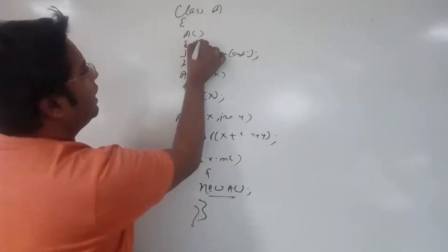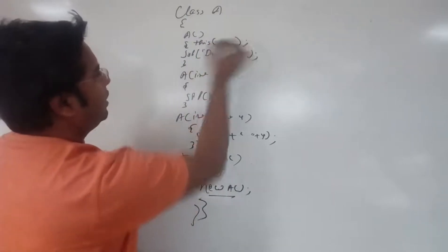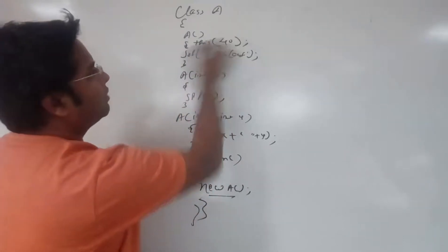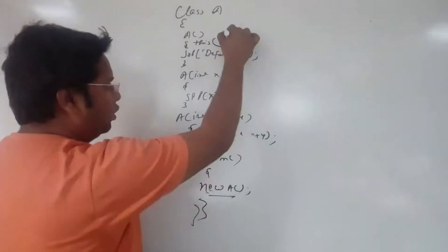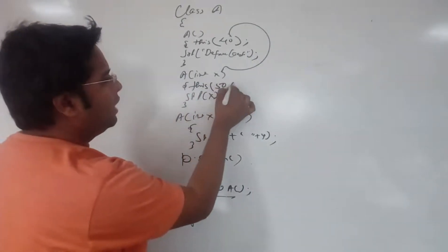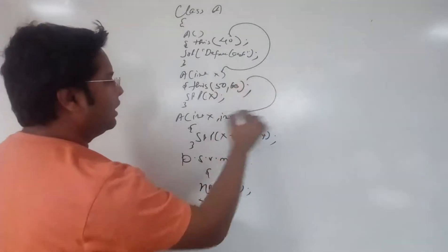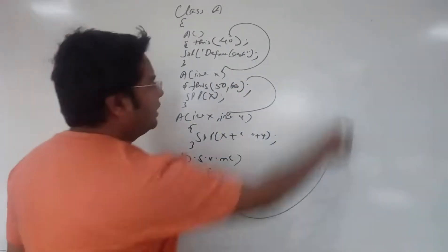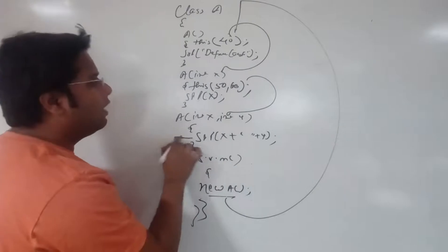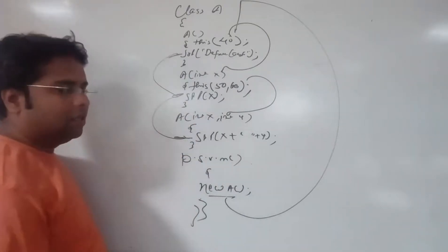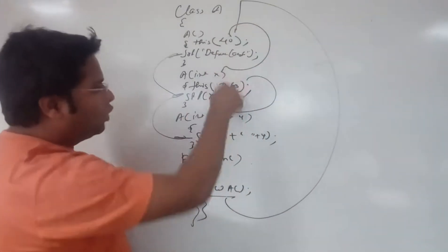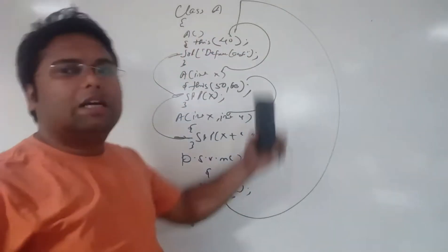Here we pass one argument — 4040. What this will do is call the constructor and come here. This brand of calling is called Constructor Chaining.